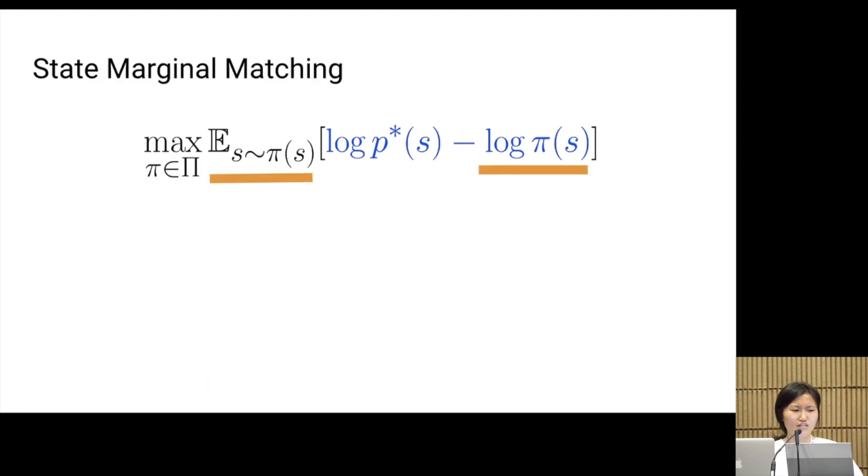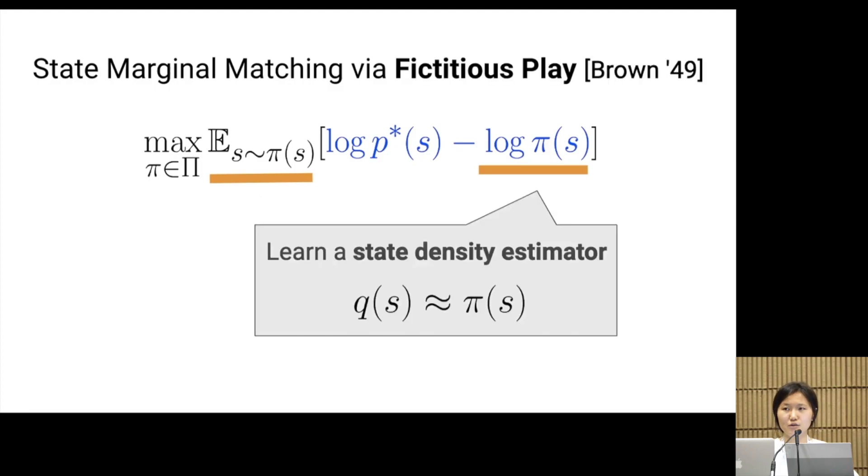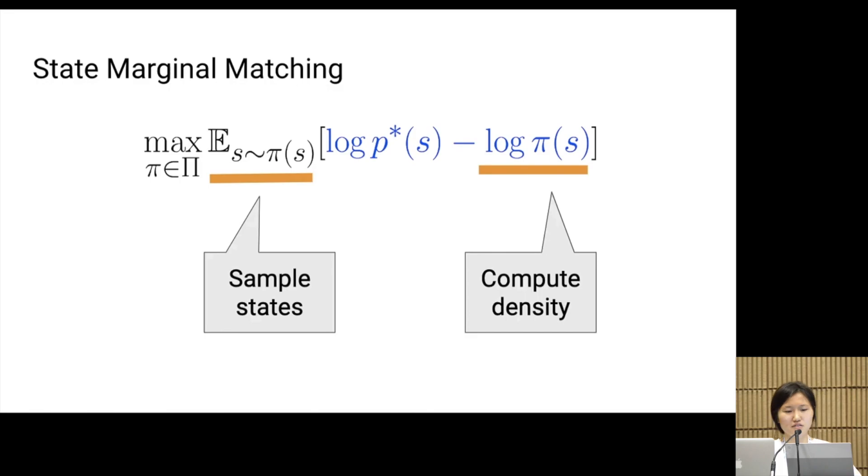Note that the objective depends on the policy π in two places. First, to compute the expectation, we sample states from π(s). Second, inside the expectation, we compute the density under π. So we have this cyclic dependency where the reward function depends on the policy so we can't just apply standard RL.